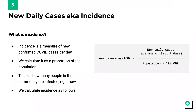Let's start by defining incidence. Incidence is a measure of new confirmed COVID cases per day — basically, how many more people are becoming infected every day. To ensure that incidence can be compared across geographies, we calculate it as a proportion of the population, specifically as new daily cases for every 100,000 people.